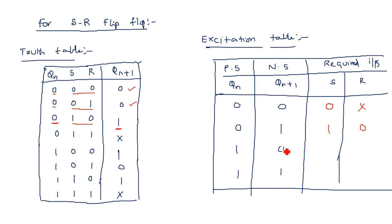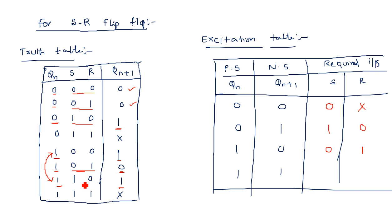For Qn=1, Qn+1=0: this occurs only in one case where S=0, R=1, so we write S=0, R=1. For Qn=1, Qn+1=1: this occurs in two cases — S=1,R=0 and S=0,R=1 — so R is fixed at 0 but S is varying, so S is don't care: S=X, R=0. This completes the derivation of the excitation table for the SR flip-flop.